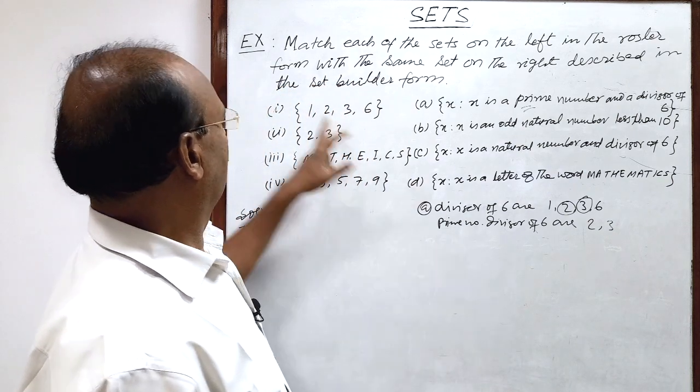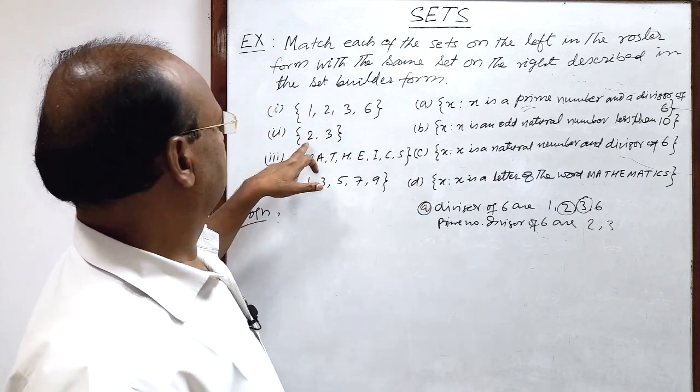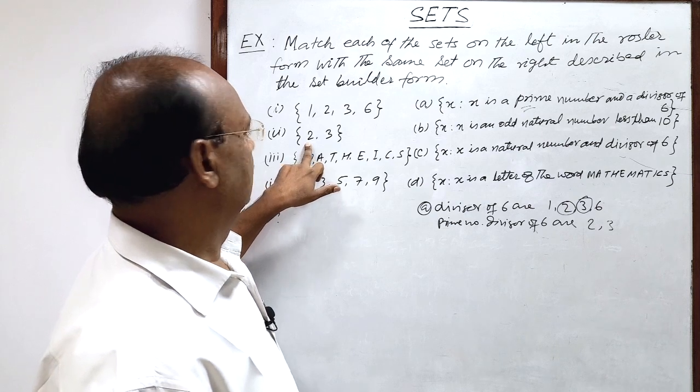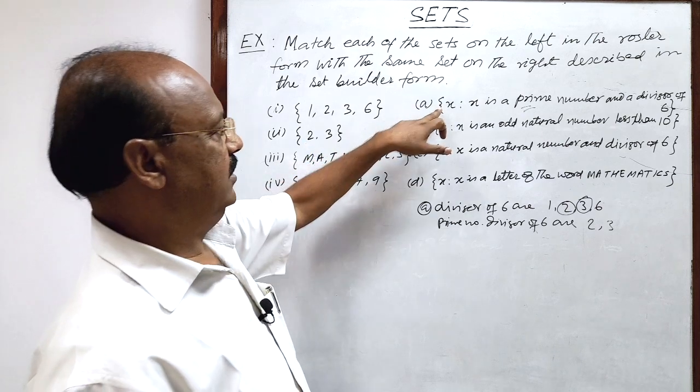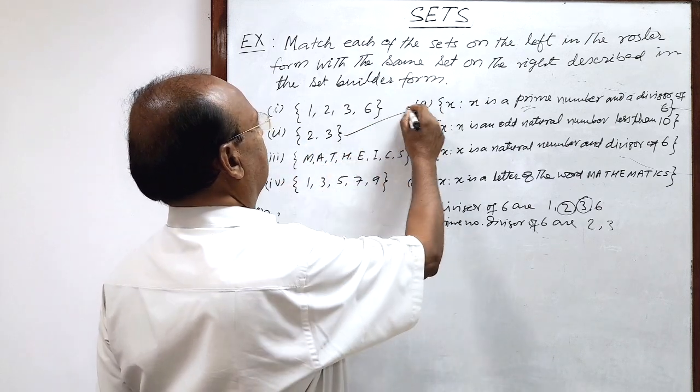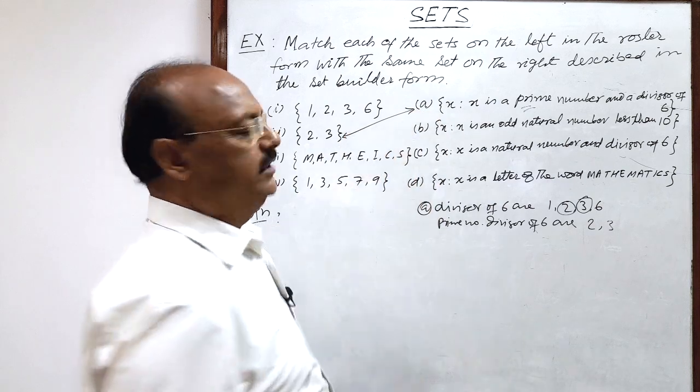So you see 2 and 3 is where? This 2 and 3. So this set A matches with set with set 2.